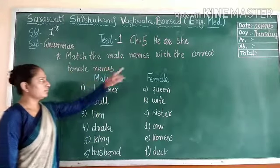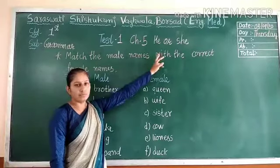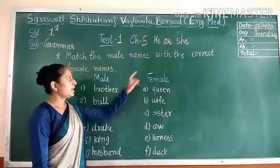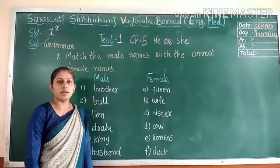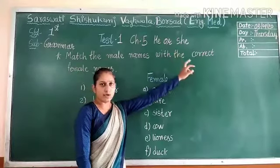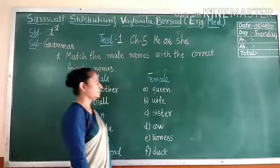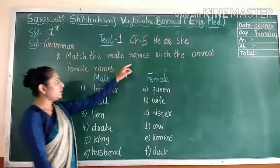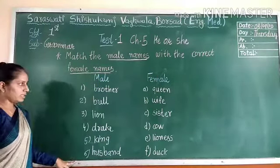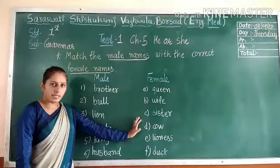Now let's revise Chapter 5: He or She. He is used for male and She is used for female. For example, He refers to: brother, uncle, father, son, etc. She is used for female — for example: wife, auntie, mommy, mother, etc. Now match the male naming words with the correct female naming words. Male words are given on one side and female words on the other side.